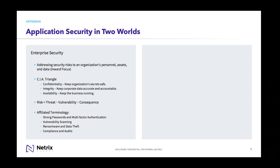Enterprise security is about keeping organizations' secrets safe, the data accurate and accountable, and keeping the business running. For anyone calculating security risks, you do some simple calculations to determine what the consequences are going to be, how likely it is that a vulnerability is going to be exploited, and how likely a particular threat actor is going to come at the organization. This drives enterprise security strengthening items like having employees use stronger passwords, performing vulnerability scanning on systems and networks, talking about defenses against ransomware and data theft, and making sure we're up to date on compliance and audit requirements.